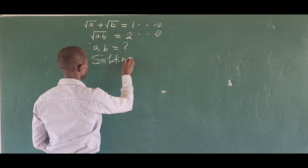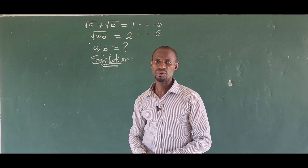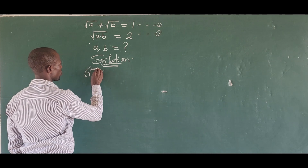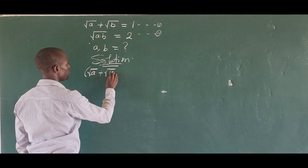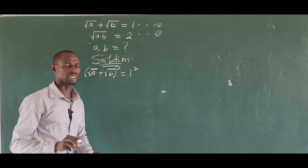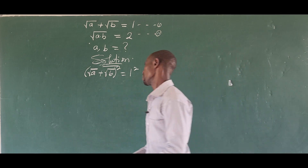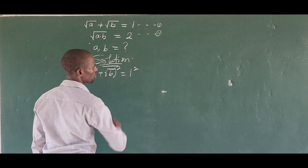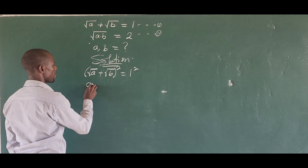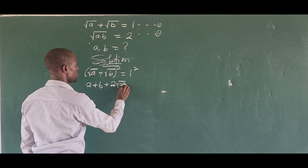The first thing we do is take equation one and square both sides. Squaring both sides gives us the bracket [sqrt(a) + sqrt(b)] all to the power of two, equal to one to the power of two. We do that to eliminate the square root radical. This gives us a plus b plus 2*sqrt(ab), equal to one.